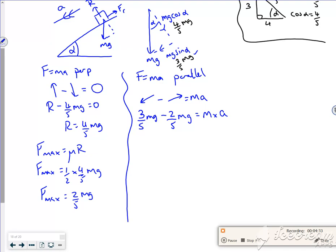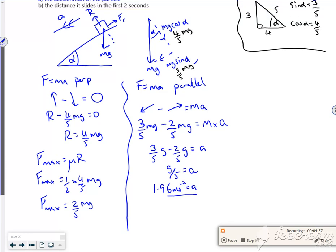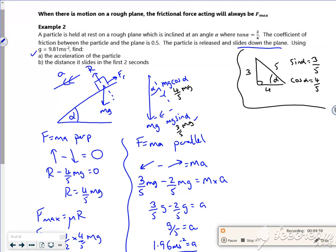All the m's disappear, so I've got three fifths of g minus two fifths of g is equal to a. Three fifths take two fifths is one fifth, so I've got g over five is my acceleration, which is roughly 1.96 meters per second squared. That's quite nice. So I found my acceleration. I've done that.